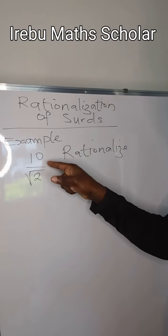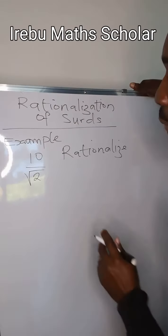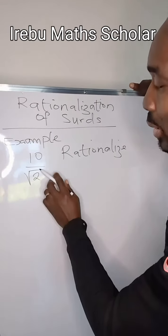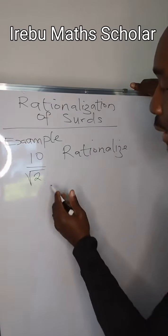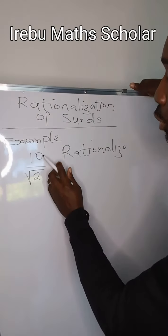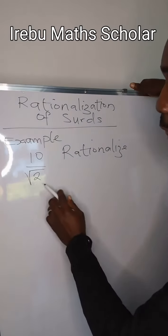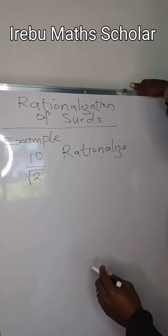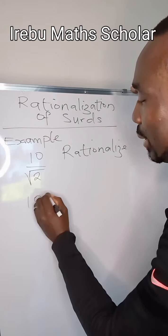In order to rationalize this problem, we need to see how we can remove the square root from the denominator. How do we do that? If we multiply both the numerator and the denominator by what we have at the denominator, the square root should be able to cancel out. What that means is that we are going to have 10 times...